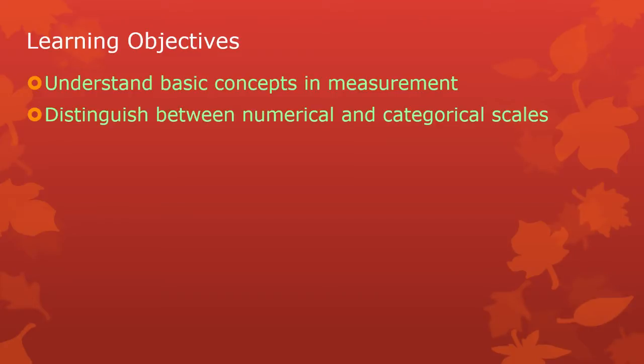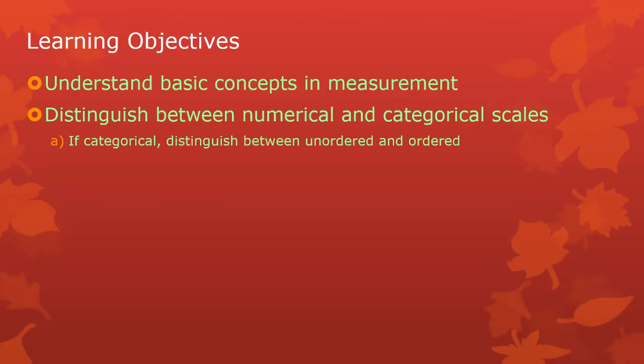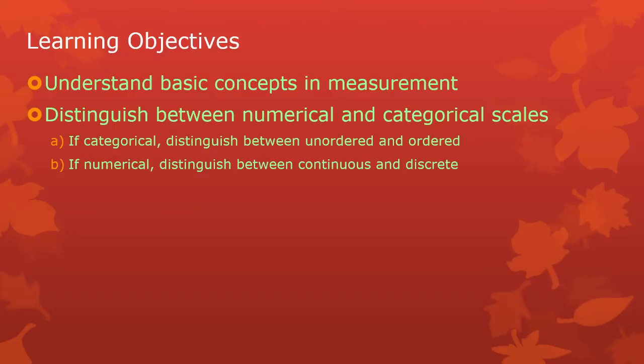Learning objectives are to understand the difference between numerical and categorical scales, and if a scale is categorical, distinguish between unordered and ordered. If it's numerical, distinguish between continuous and discrete. The second one — continuous versus discrete — is not nearly as important as the first, which is unordered versus ordered categorical. And the most important goal here is to distinguish between numerical and categorical.